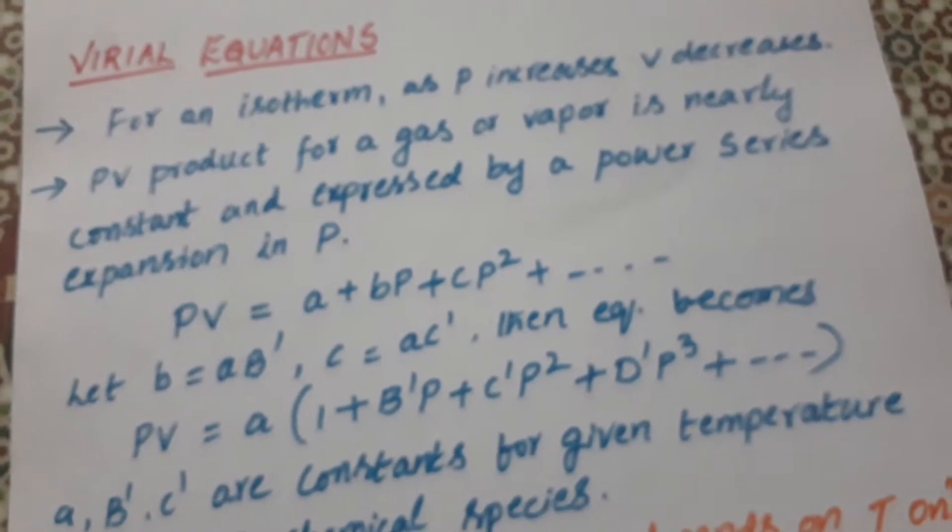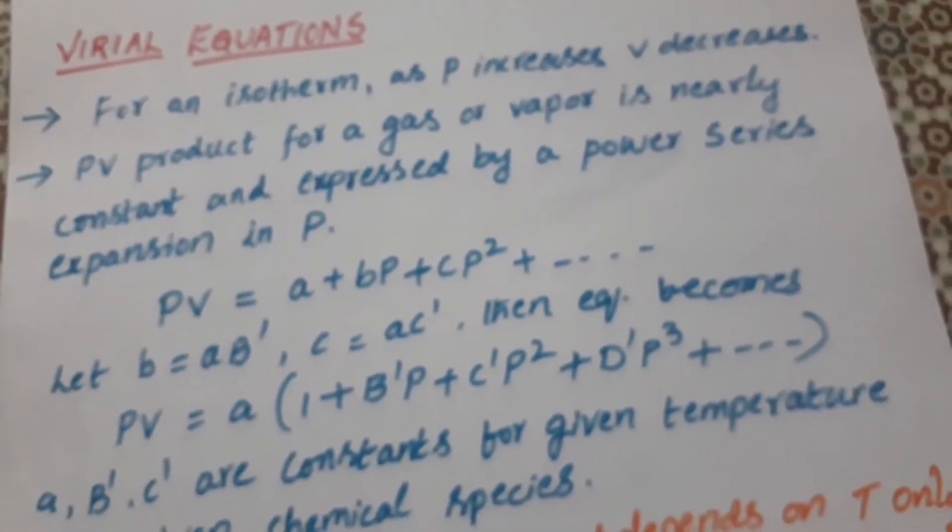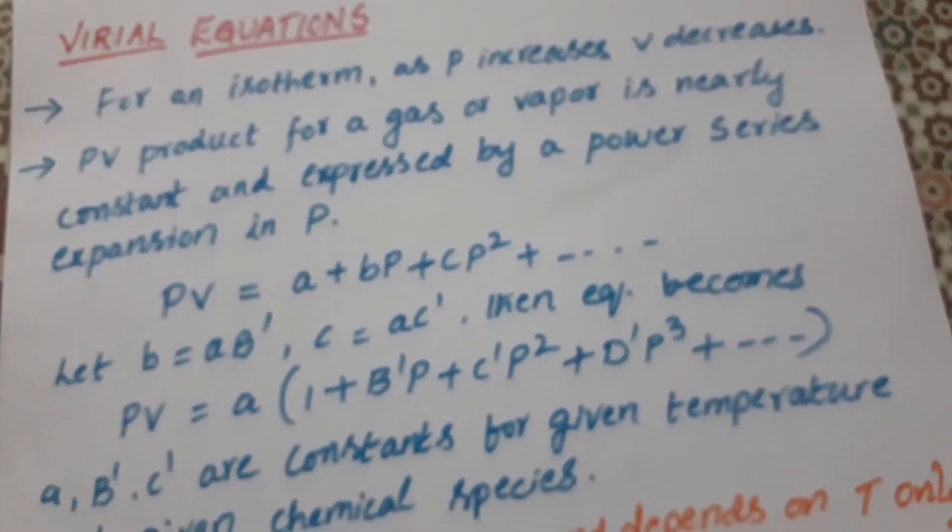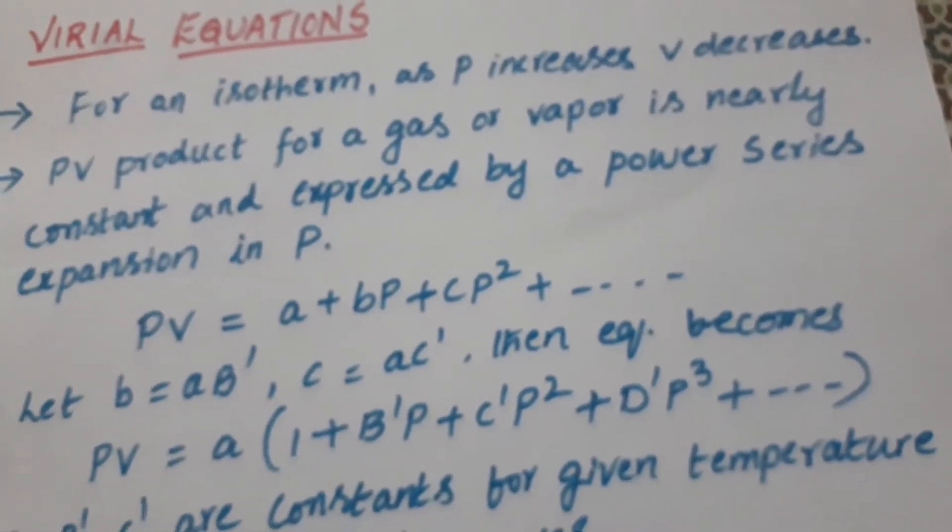For an isotherm, isotherm means constant temperature. For an isotherm, if we consider as P increases, V decreases. That means the pressure increases, then the volume will decrease.